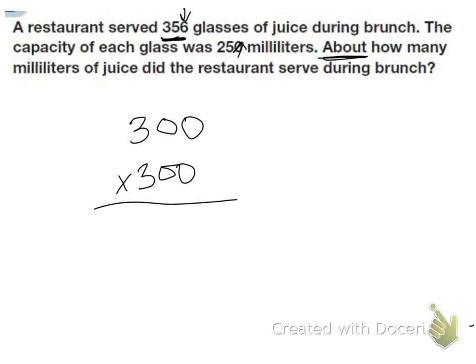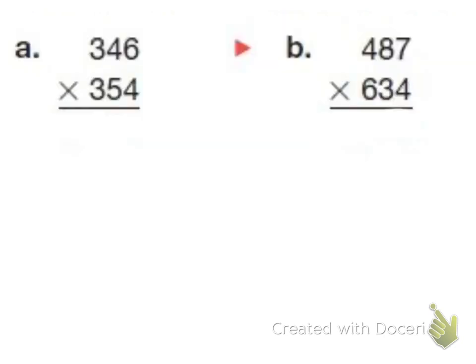So 300 times 300. Well, the two zeros here I can just bring down actually. Because when I multiply by zeros, my answer is always zero. Then I can multiply by the three. So three times zero is zero, three times zero is zero, and three times three is nine. So this is about ninety thousand milliliters, or ml, of juice.